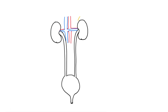Above the kidney, we have to show a slightly triangular structure. Now the drawing is complete. Let's start the labeling. First, mark arrows to the blood vessels showing the blood flow.